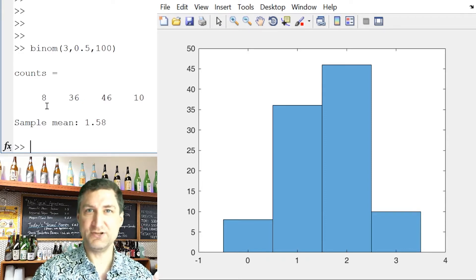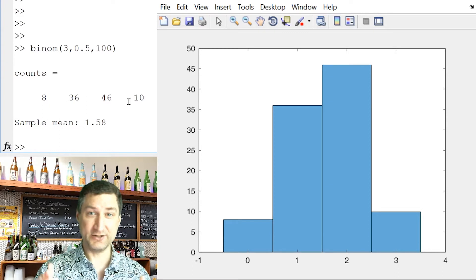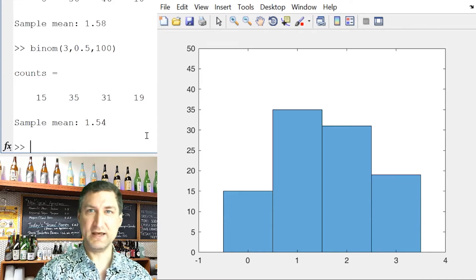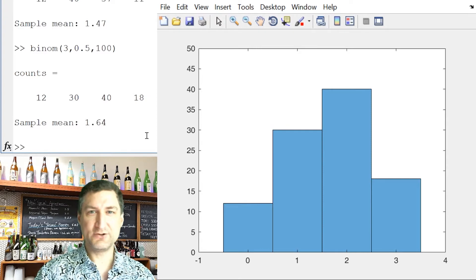And if you look at the sample mean, which is eight times zero plus 36 times one plus 46 times two plus 10 times three, all divided by 100 trials, I get this 1.58. Now I know from previous numerical experiments that when I do the experiment 100 more times, I'm going to get some different answers. So when I don't do that many trials, my expected value is not necessarily going to match the sample mean.